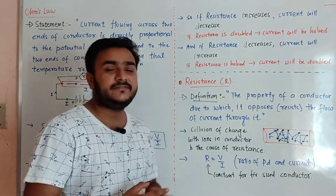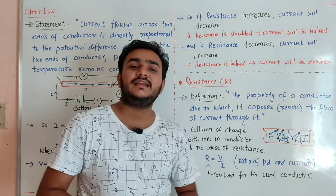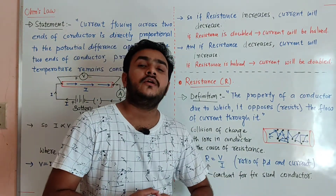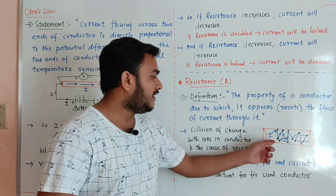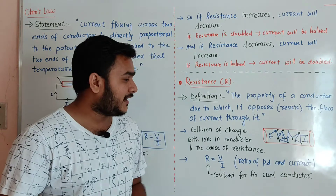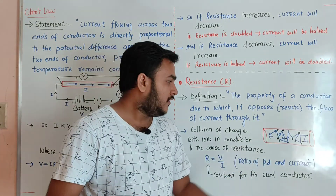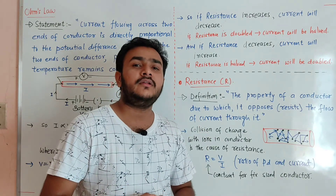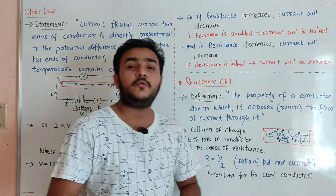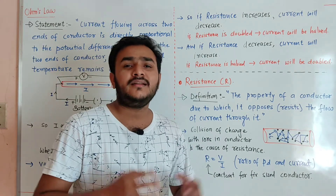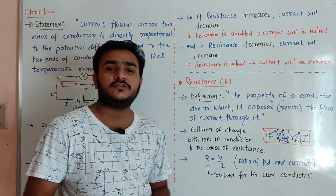Resistance is defined as the property of a conductor due to which it opposes the flow of current through it. In order to understand this term, consider this schematic diagram showing the motion of free electrons inside the conductor. Since current in the conductor is due to the motion of free electrons, these free electrons moving inside the conductor will rapidly collide with other atoms and ions present in the conductor. Due to this, the path of the free electrons becomes zigzag instead of a straight line. This opposition provided by collisions with random atoms and ions produces resistance in the conductor. So collision of charges with the ions in the conductor is the cause of resistance.